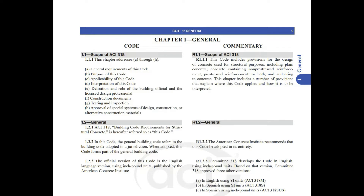The scope also covers construction documents, testing and inspection, and approval of special systems of design, construction, or alternative construction materials. The commentary notes that this code includes provisions for design of concrete used for structural purposes, including plain concrete, pre-stressed reinforcement or both, and anchoring to concrete. Chapter 1 specifically explains where this code applies and how it is to be interpreted.